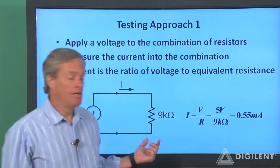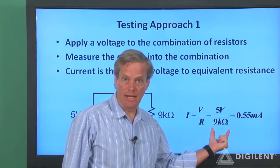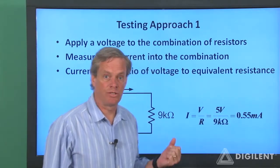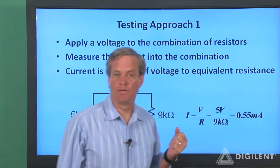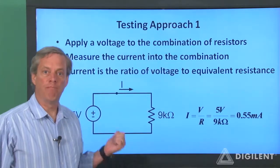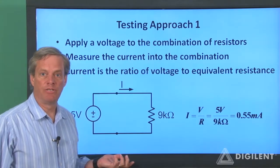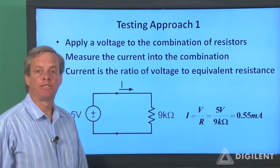For our example, if our resistance actually is 9 kiloohms and we apply 5 volts across the resistors, we should get a current of about 0.55 milliampere. Let's wire up our circuit, measure the current through the series combination of resistors now, and see if it matches our expected current.